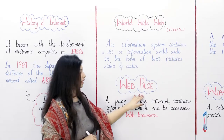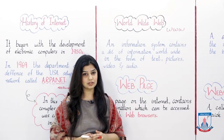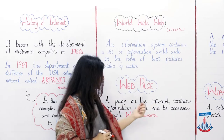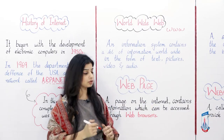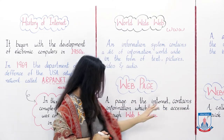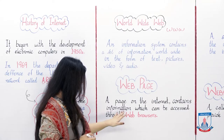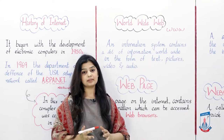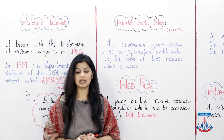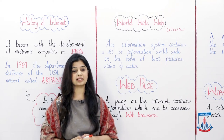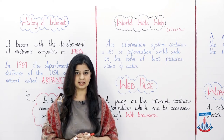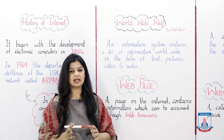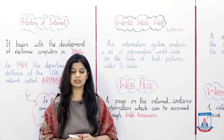Next is the web page. What is a web page? A web page is a page on the internet which contains information that can be accessed through web browsers. The internet also has pages for users, and those pages display information accessible through web browsers.